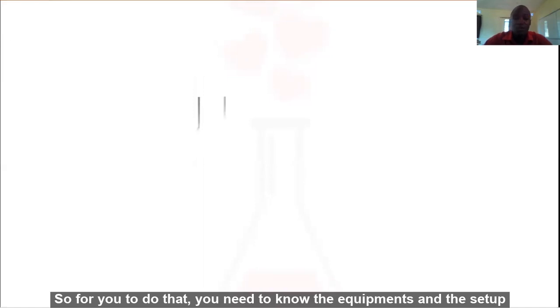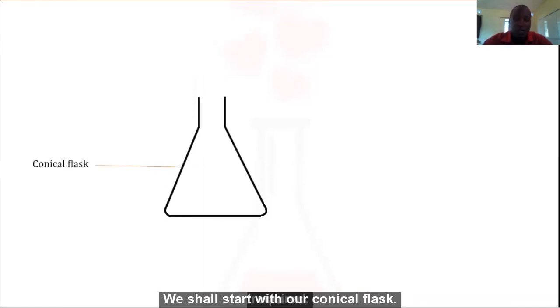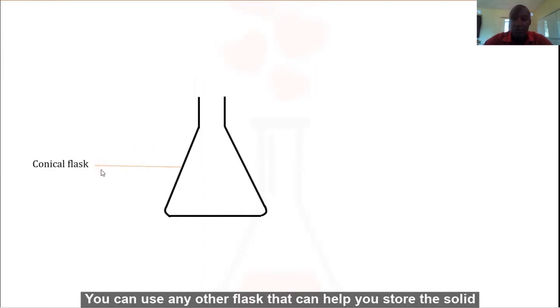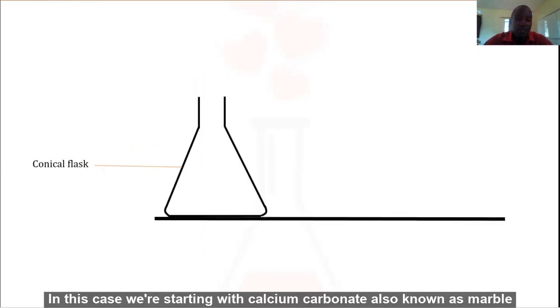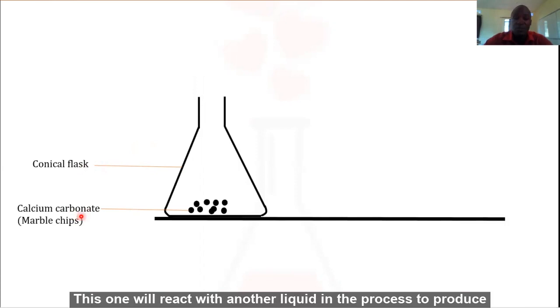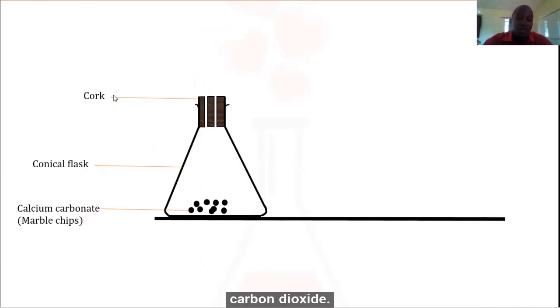For you to do that you need to know the equipment and the setup required. We shall start with our conical flask. You can use any other flask that can help you store the solid reactant. In this case we are starting with calcium carbonate, also known as marble chips. These will react with another liquid in the process to produce carbon dioxide.